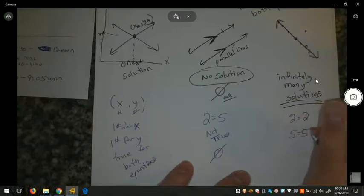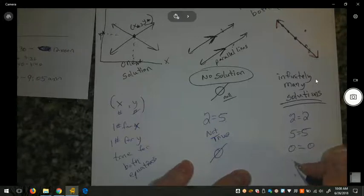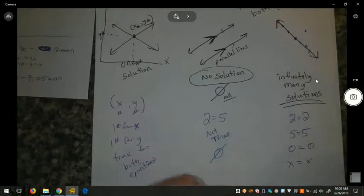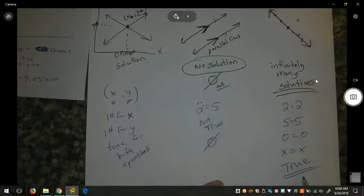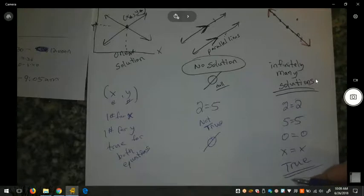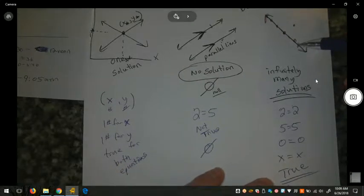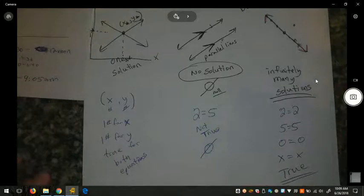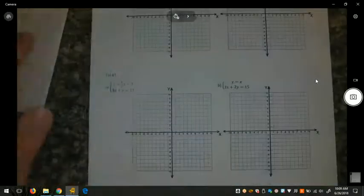So since all of these statements are true, what that means is that there are infinitely many solutions. You can pick a certain number, any number you want for x. There will be a y, maybe we don't know what it is, but there will be a height that matches that x that will be true for both equations. So let's get to graphing as we try to solve these systems of equations by graphing.